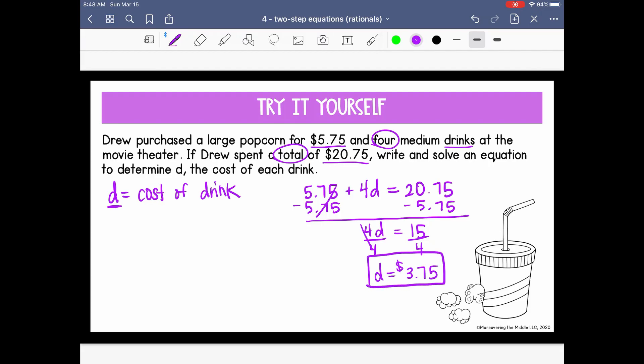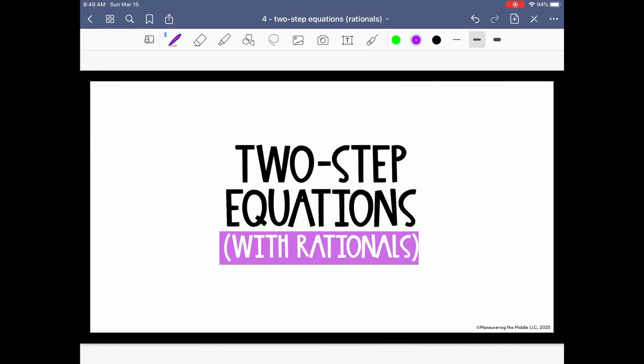All right? And again, think about if your answer is reasonable, that the drink is, you know, we could estimate and say, well, that's about $4. If we go back and plug that into this situation, four drinks at about $4, it's $16 on drinks, plus about $6 for the popcorn. That would be a little over $20 or $22, which is about right. So it's reasonable. You could actually plug this value back in for D to check your work.